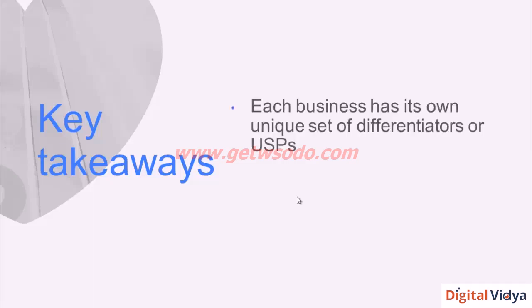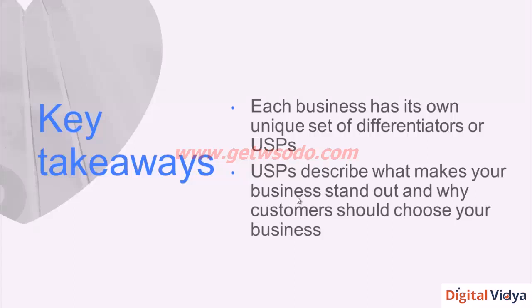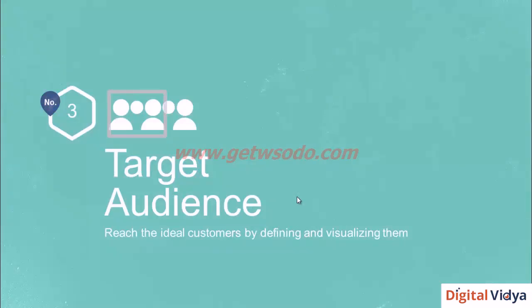Now that you've understood what USPs are and why they're extremely important for a business to have clearly defined, let's look at the key takeaways from this section. As we discussed, each business has its own unique set of differentiators — USPs. These USPs describe to customers why the business stands out and why they should choose it over competition. Now you have your objective clearly defined and your USPs in place. Let's move on to understanding our target audience and how to define it so we ensure we are reaching the right customers online.